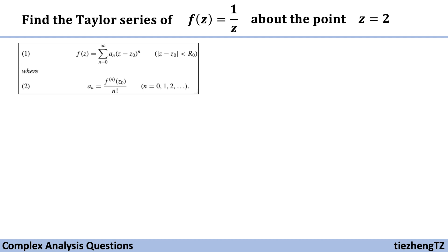Therefore, this question becomes that we need to find the general form of the nth derivative of f(z₀). We already know f(z) = 1/z, so the first step is to write down several terms of this nth derivative of f(z).